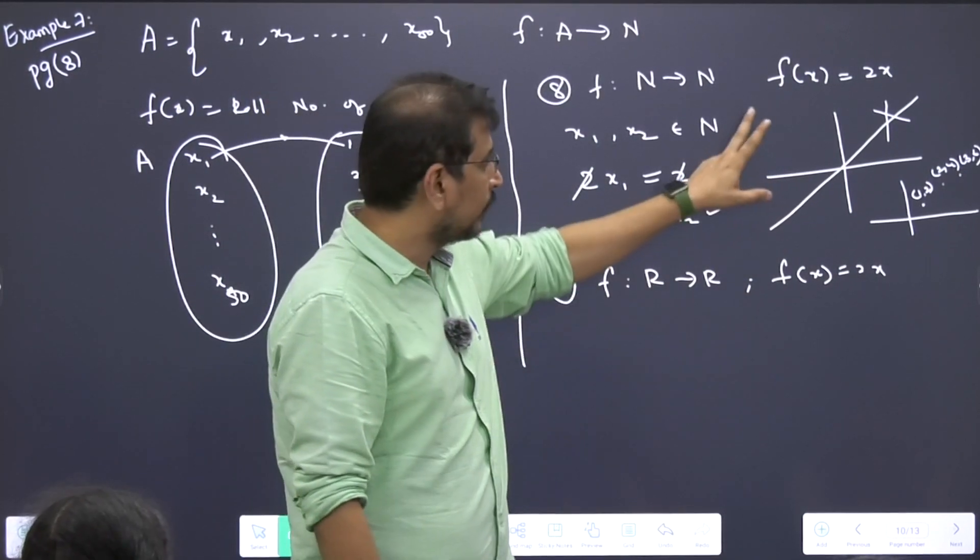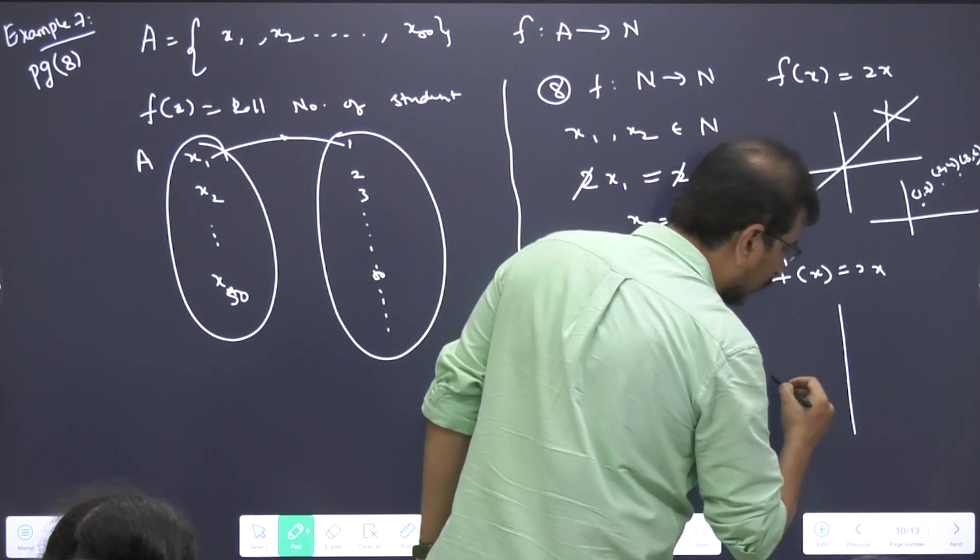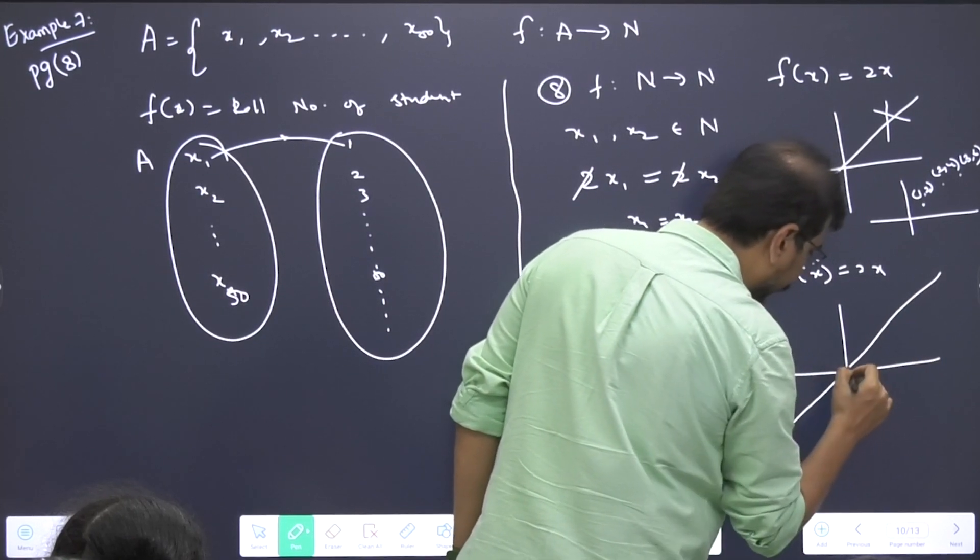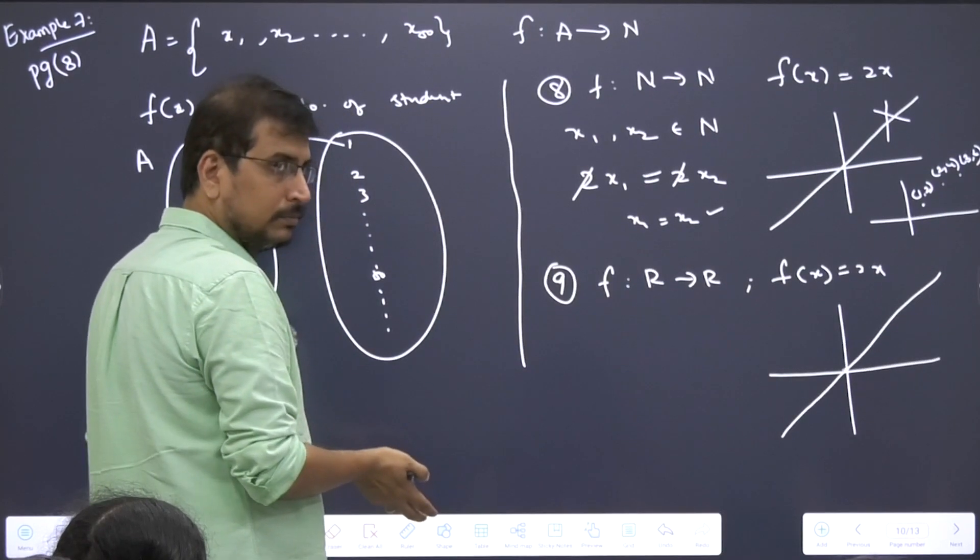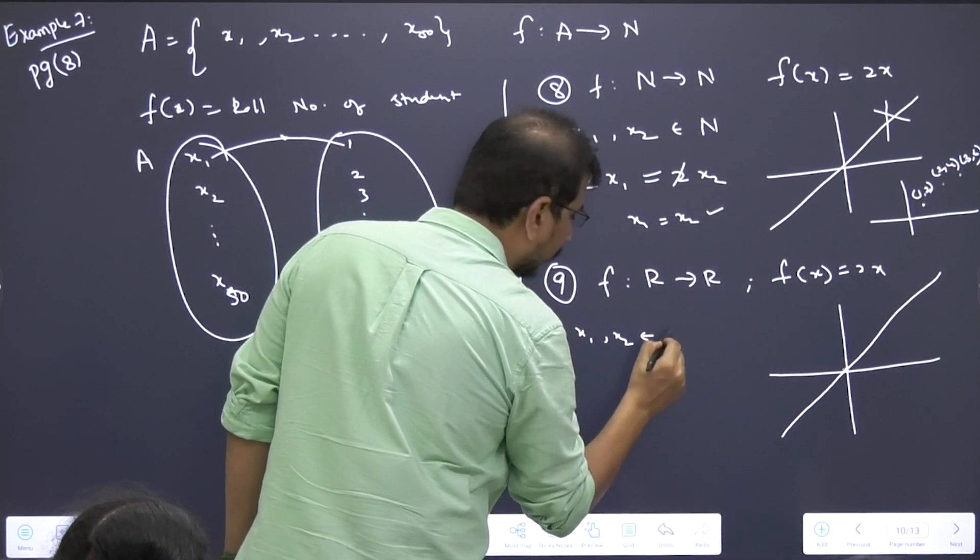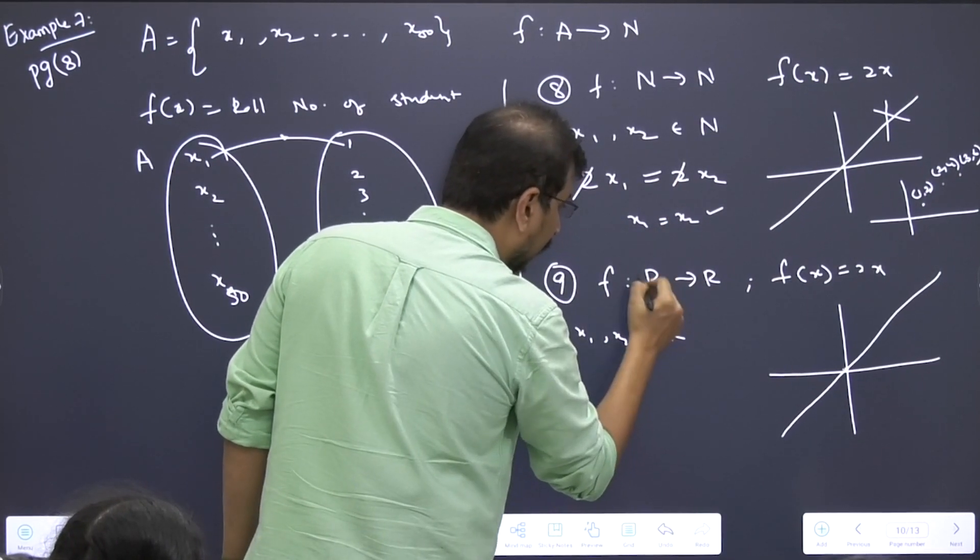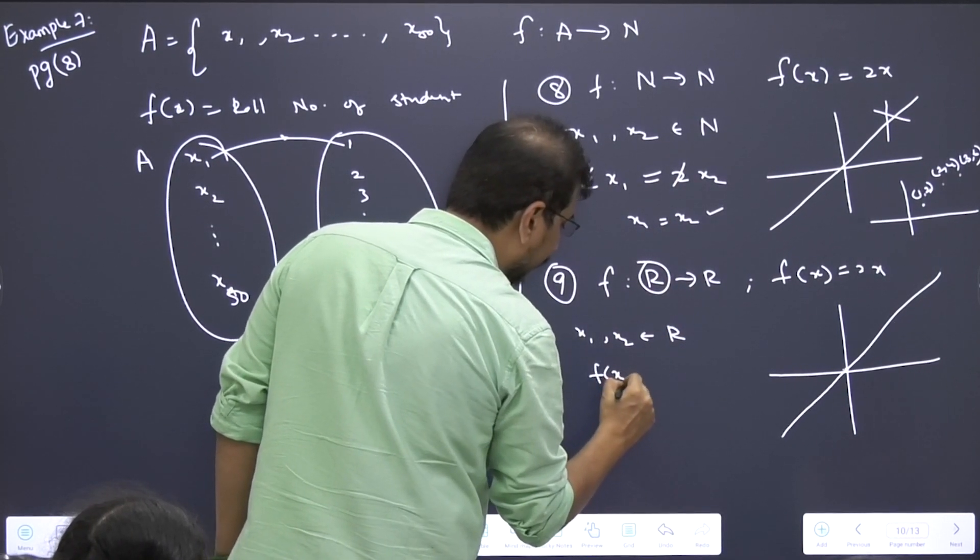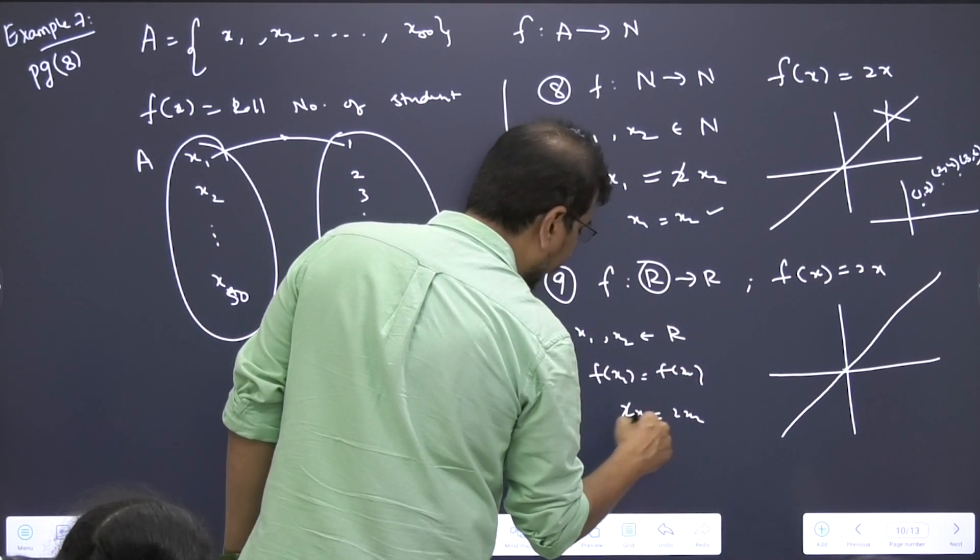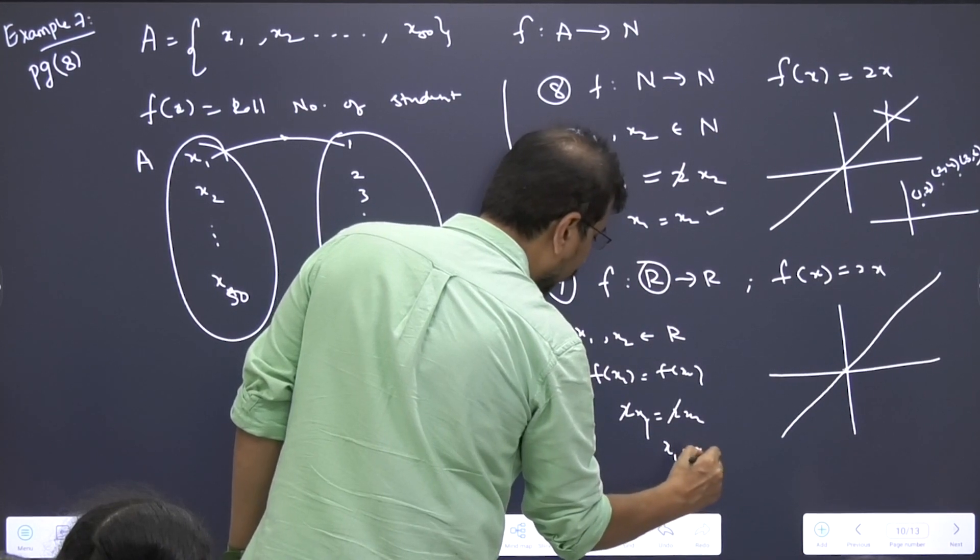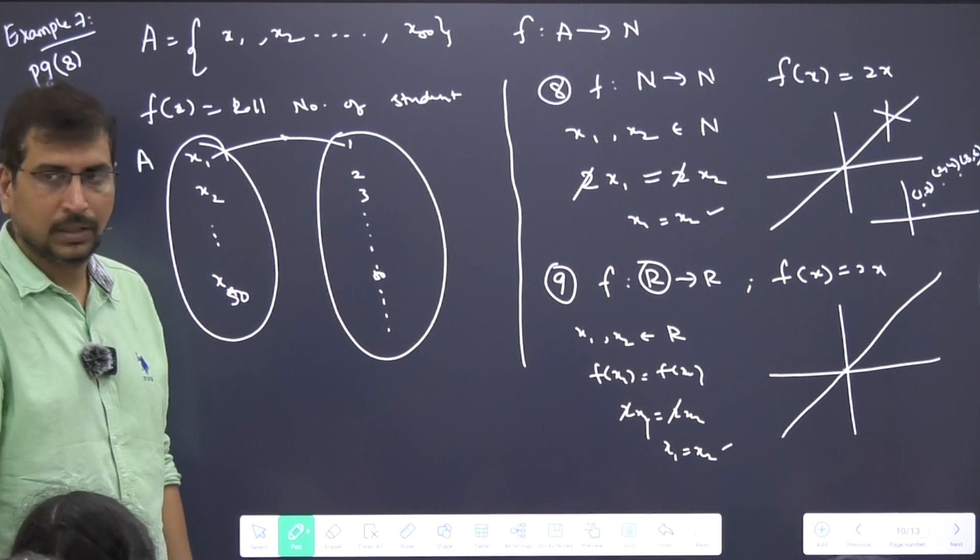Same function, but the domain and the codomain is changing the whole game. You will have x1, x2 belongs to R this time instead of N. f(x1) equals f(x2), so 2x1 equals 2x2. Cancel 2 and 2, x1 will be equal to x2, and we are done. It's simple.